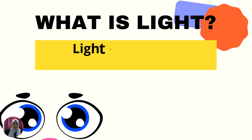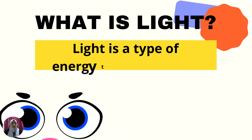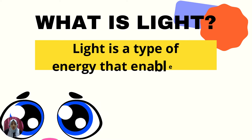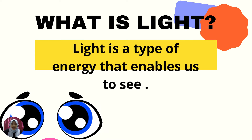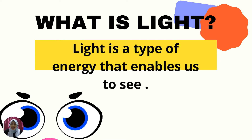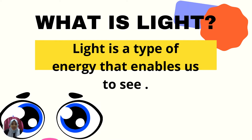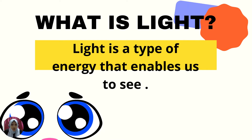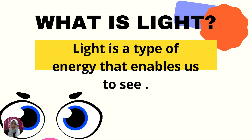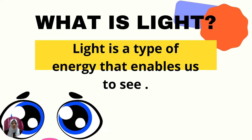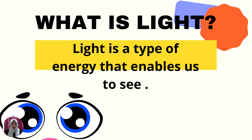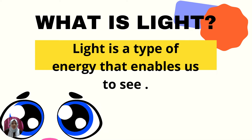Let us start and see what is the meaning of light. What is light? Light is a type of energy that enables us to see. It makes it possible for us to see the things around us.